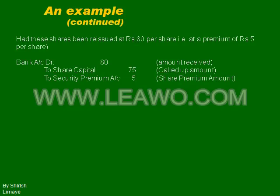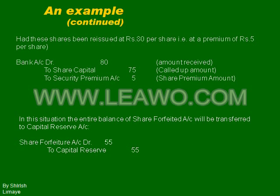Had these shares been reissued at Rs.80 per share — that is, at a premium of Rs.5 per share (since called-up amount is Rs.75) — the company earns a capital profit of Rs.5, which is transferred to a Securities Premium account. The journal entry: Bank account debit Rs.80, to Share Capital account Rs.75, to Securities Premium account Rs.5. In this situation, the entire balance of the Share Forfeiture account of Rs.55 is transferred to Capital Reserve, as none of it was utilized for reissue purposes.